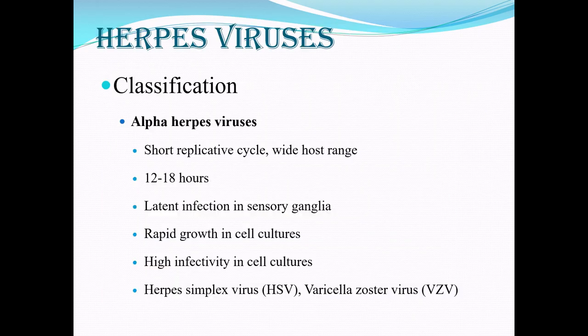The alpha herpesviruses have a very short replicative cycle — they replicate very fast — and can affect a wide range of cells, or wide host range. They may divide within around 12 to 18 hours and settle in the sensory ganglia. Cell cultures can grow them easily, and there will be quite high cytopathic effects. Examples are herpes simplex virus and varicella zoster virus.